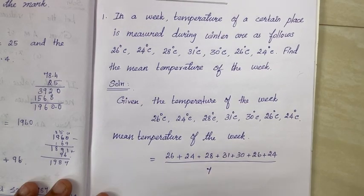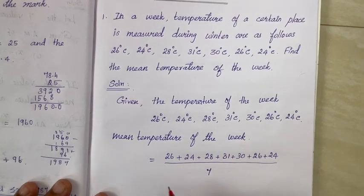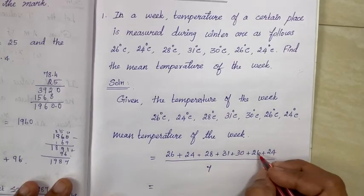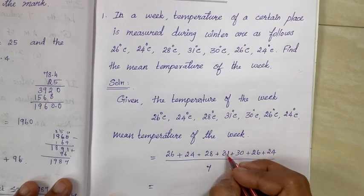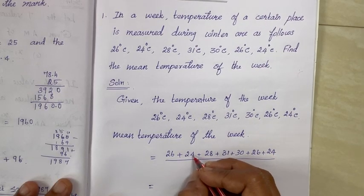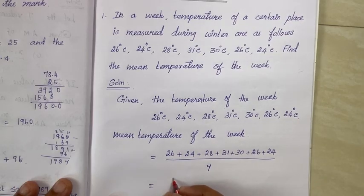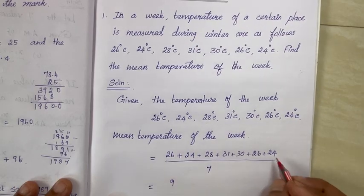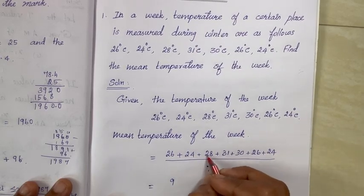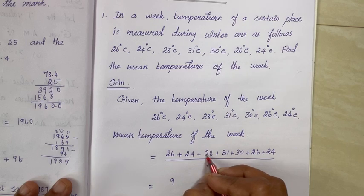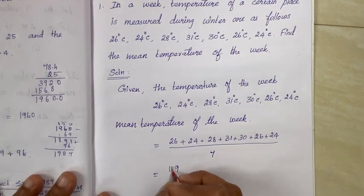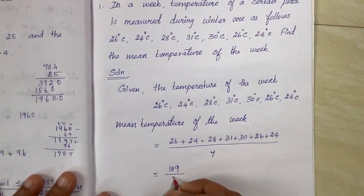A week has 7 days, so we divide by 7. Adding: 6 plus 4 is 10, plus 8 is 18, plus 1 is 19, plus 0 is 19 — step by step the sum builds to 189, divided by 7.